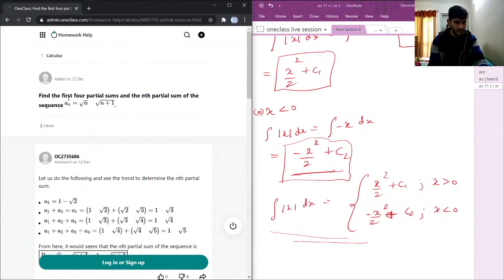We need to find the first four partial sums and the nth partial sum of the sequence a_n equal to square root of n minus square root of n plus 1. In the solution I can see a minus sign here, but here it is different.